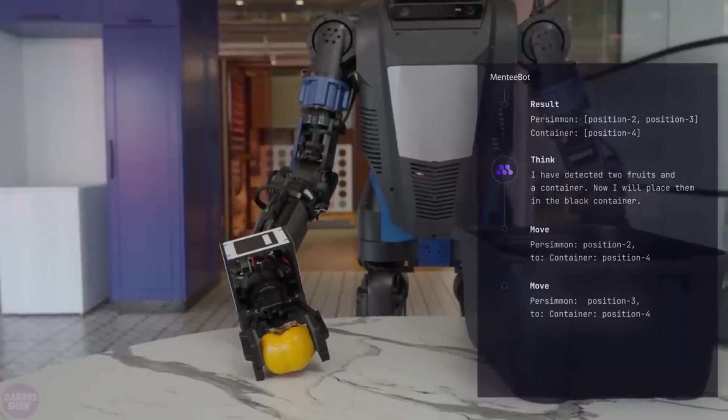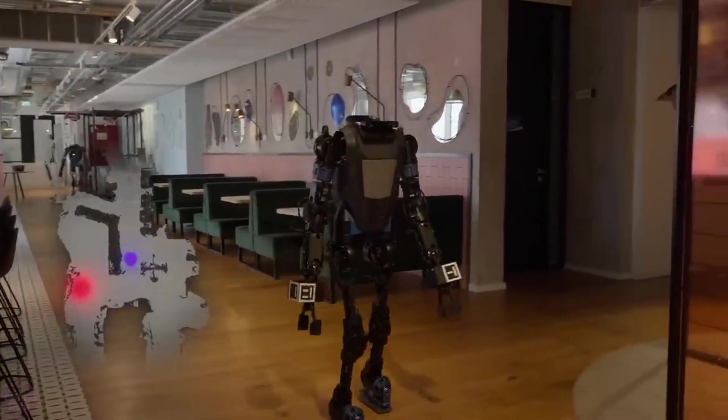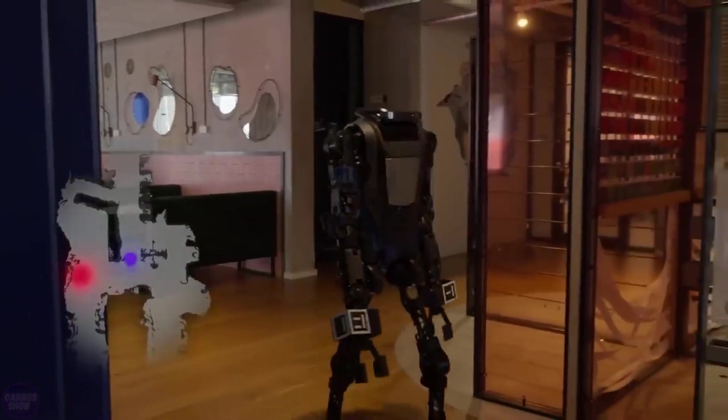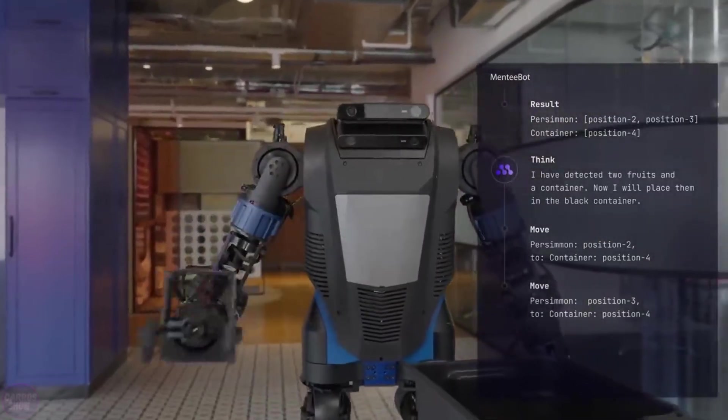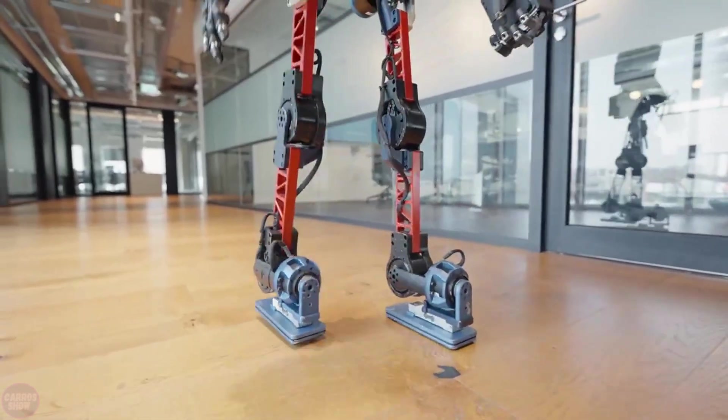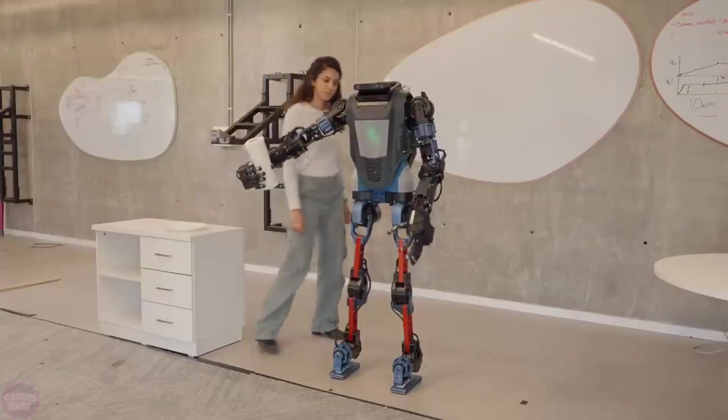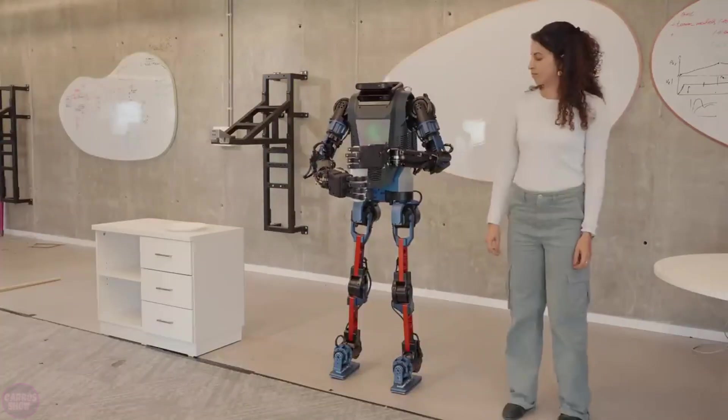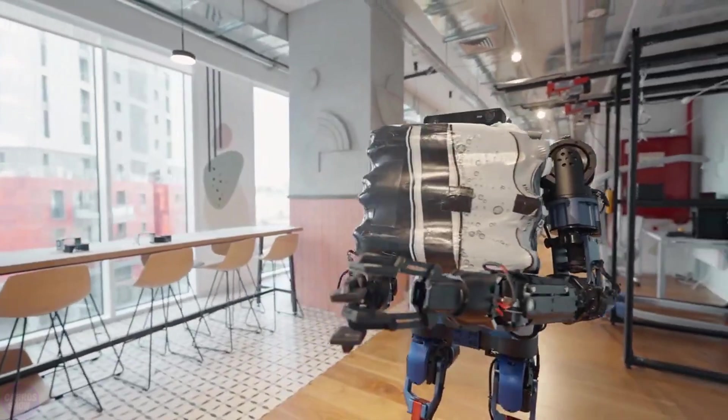However, Menti Robotics noted that this is not the final version. The company also announced that it initially targets two main markets for the Menti humanoid. One of these markets is the household sector, where a domestic assistant capable of maneuvering in households can perform a range of tasks, including setting the table, cleaning, laundry, and learning new tasks on the fly through verbal instructions and visual imitation.